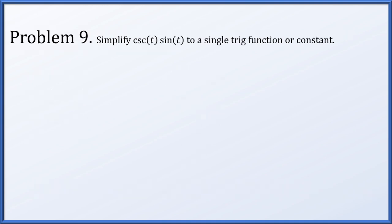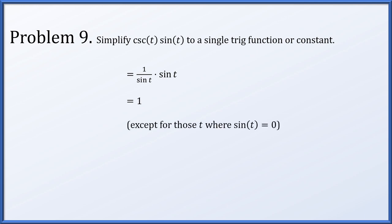In problem 9, we simplify csc(t) · sin(t) to a single trig function or constant. Since csc t = 1/sin t, the product 1/sin t · sin t = 1. We want to be careful: if sin t = 0, csc t doesn't exist, so we're not considering those values of t anyway since we wrote down csc t to begin with.